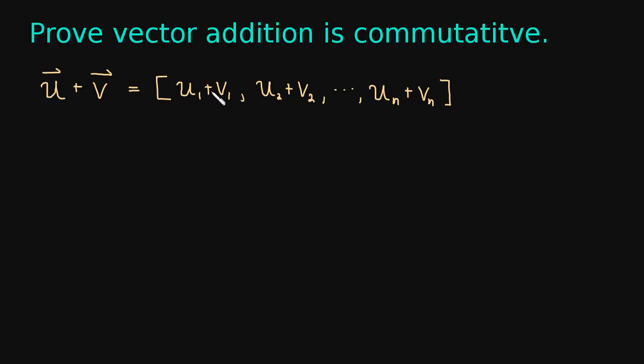Well, these numbers here, u1 and v1 and u2 and v2, those are just real numbers, right? Numbers like 2 and 4 and pi if it's pi, and just real numbers.